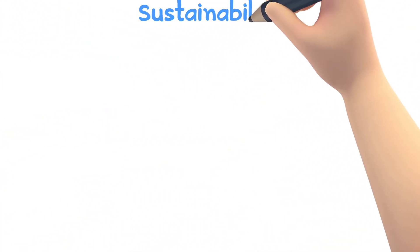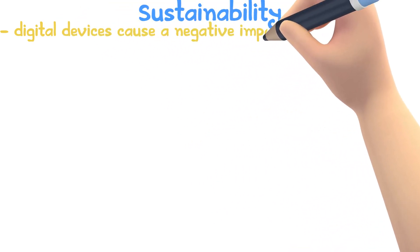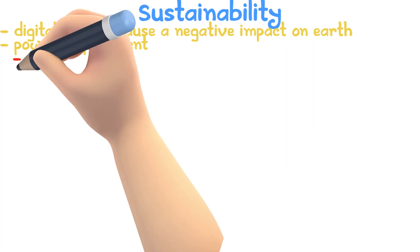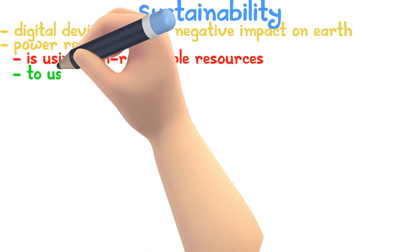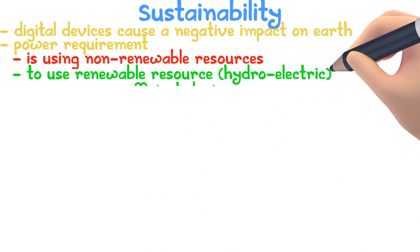The use of digital technology can have a negative impact on the earth and causes a lot of sustainability issues. Power requirement: since most power uses non-renewable resources, the planet's resources are slowly reducing. The best way to address this is to use renewable resources like hydroelectric power or to use more energy-efficient devices.